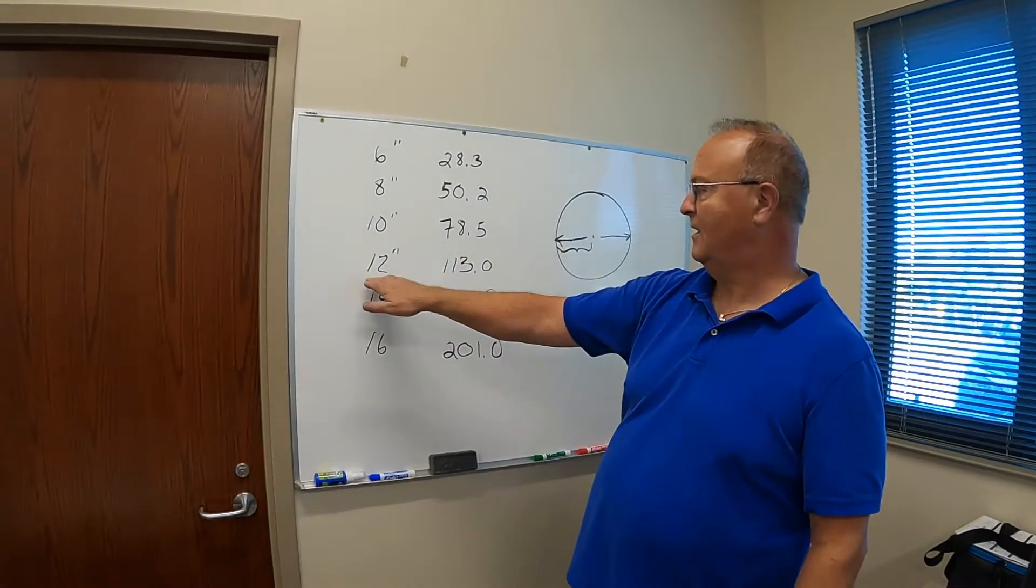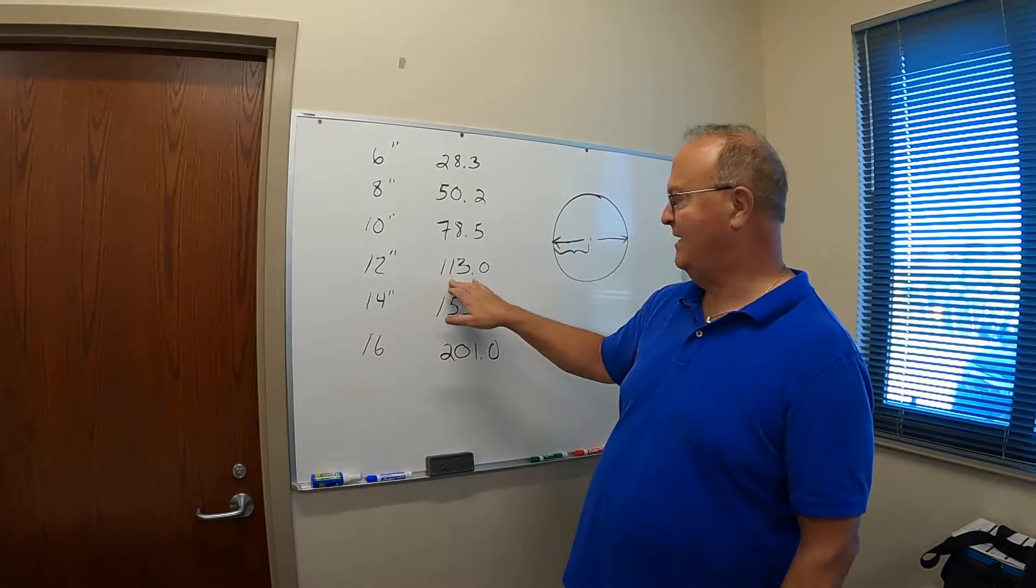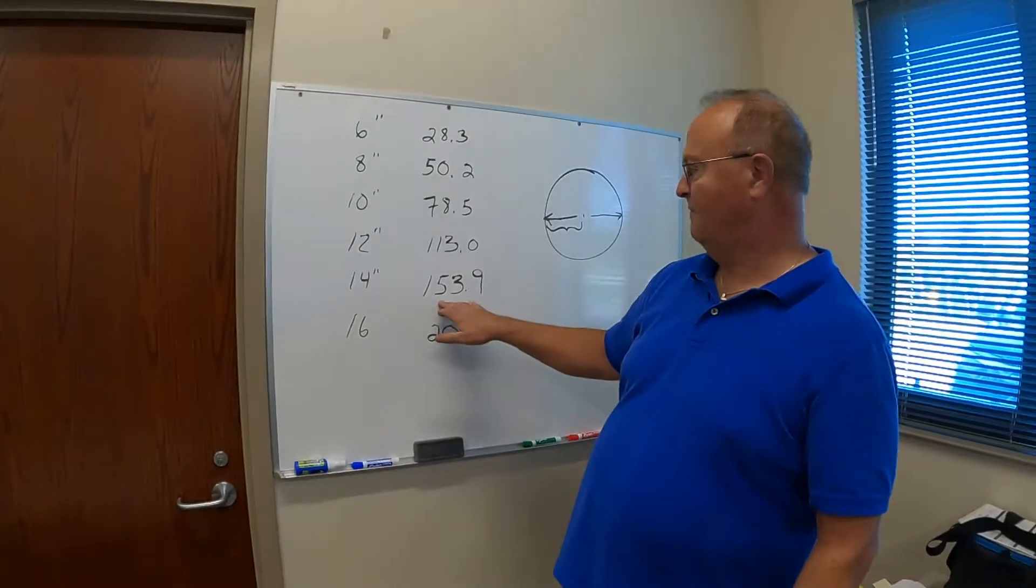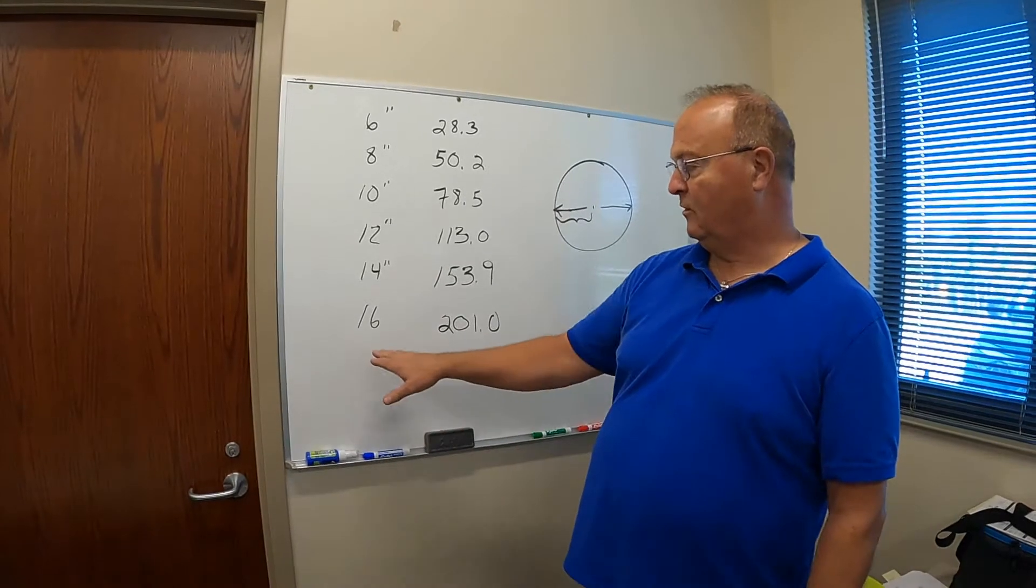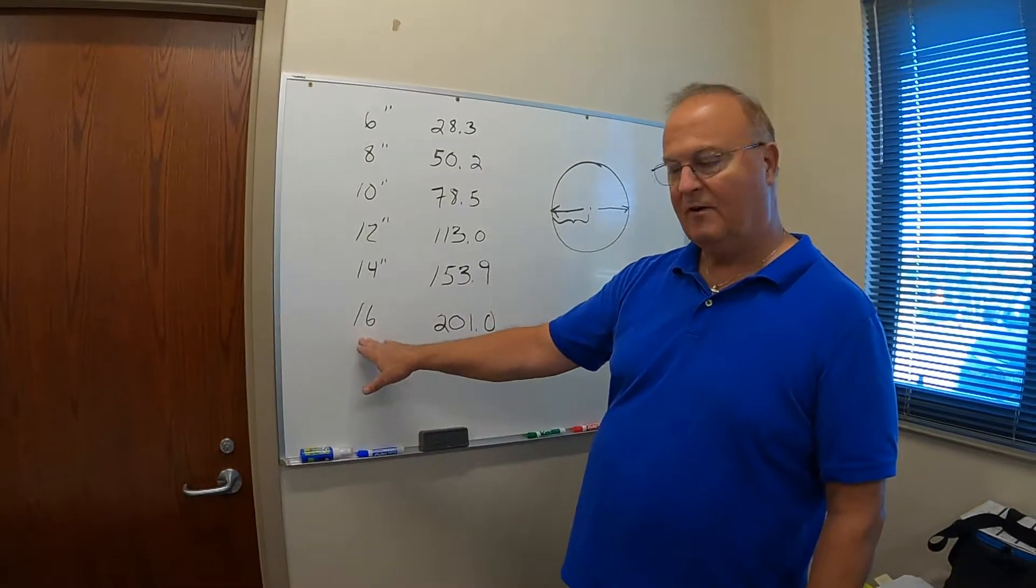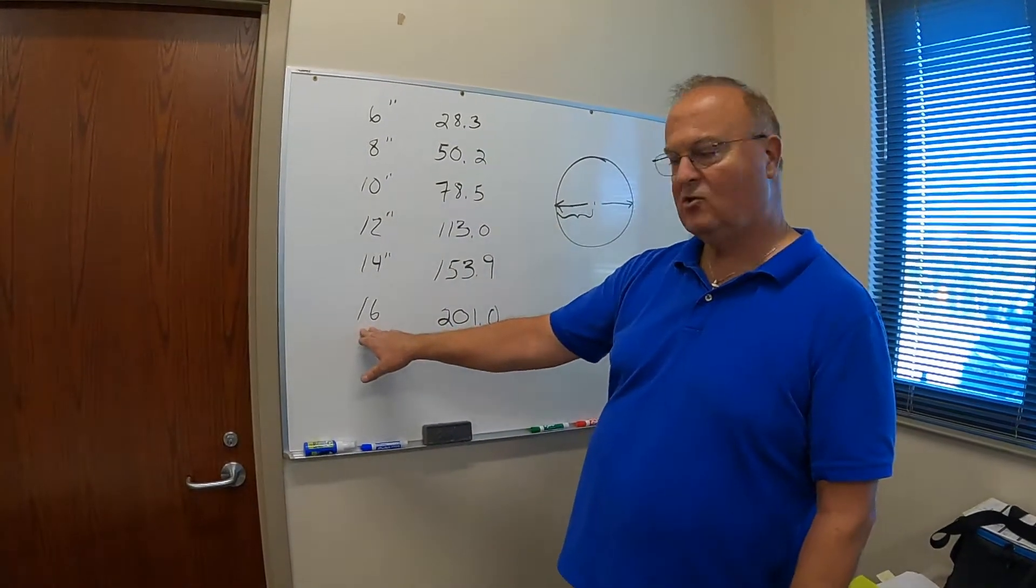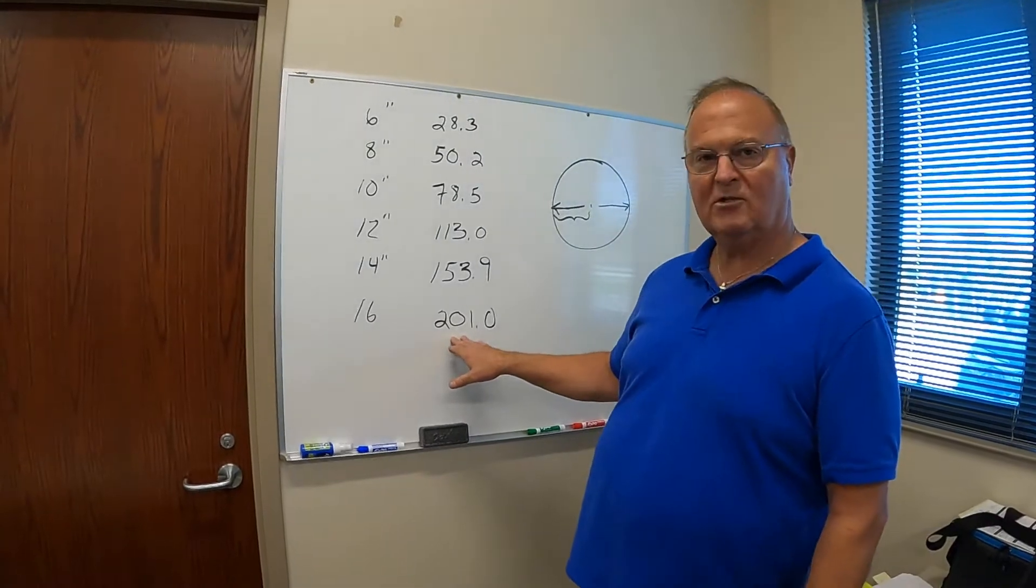A 10 inch is only 78, a 12 inch is 113, a 14 inch round duct is 153.9 or 154 square inches. But if you only want one duct off the plenum for your vapor fire, you need to go up to a 16 inch round duct, because that gives you 201 square inches.